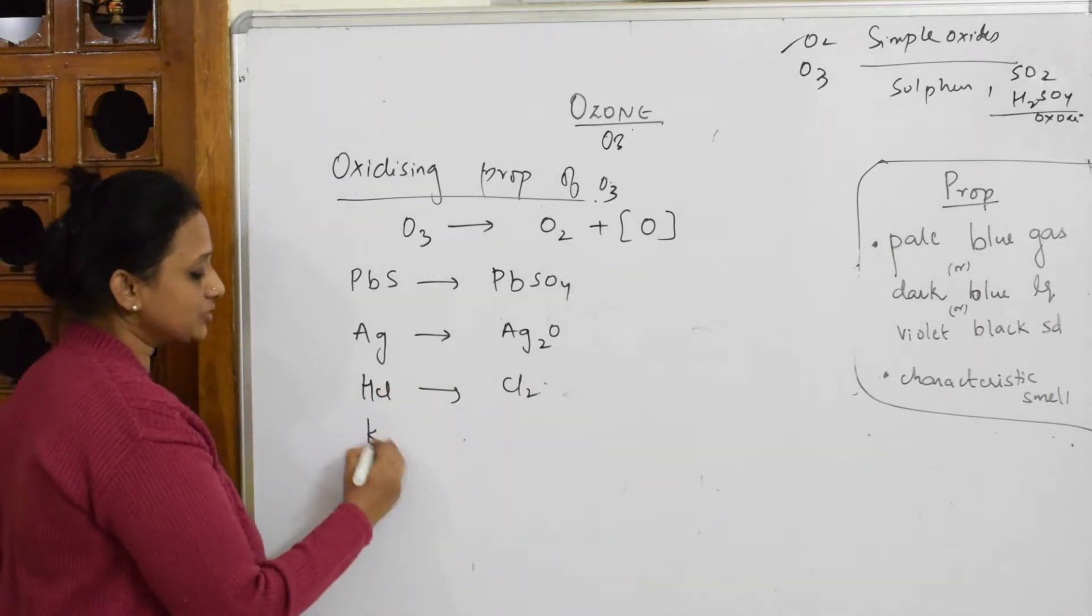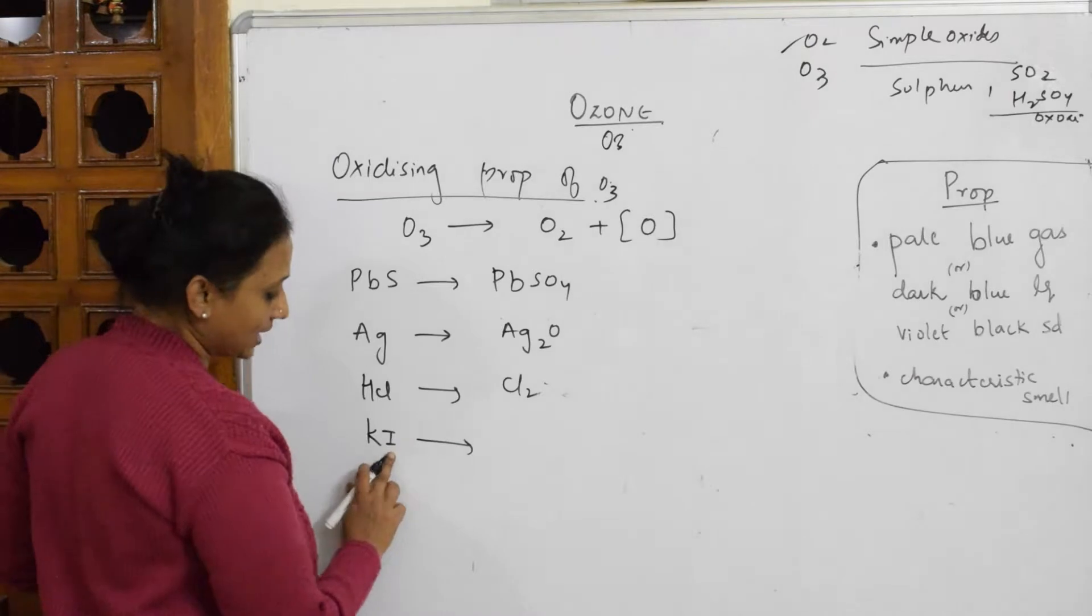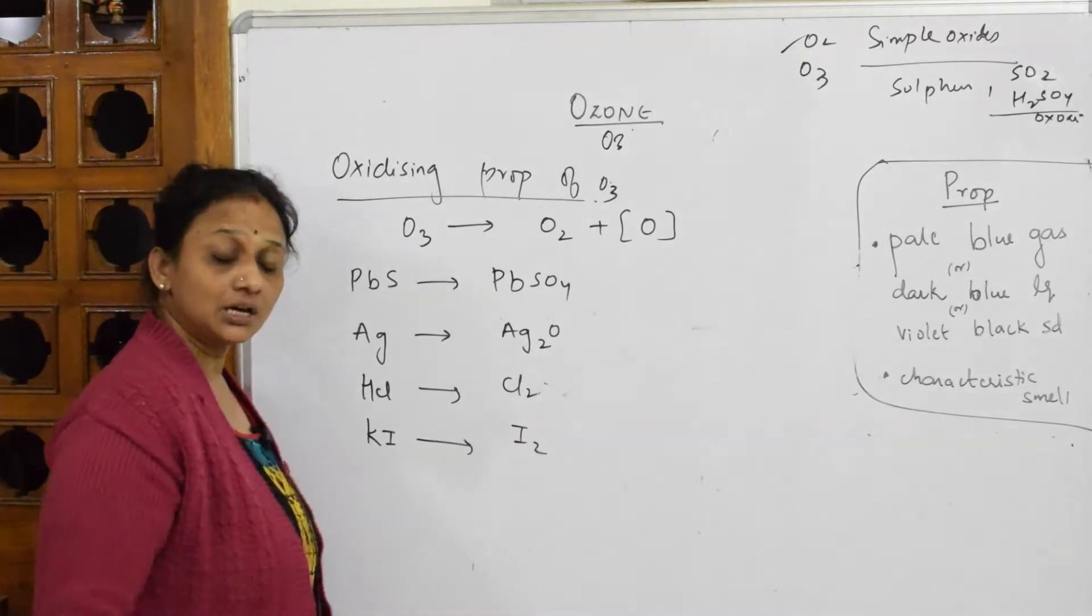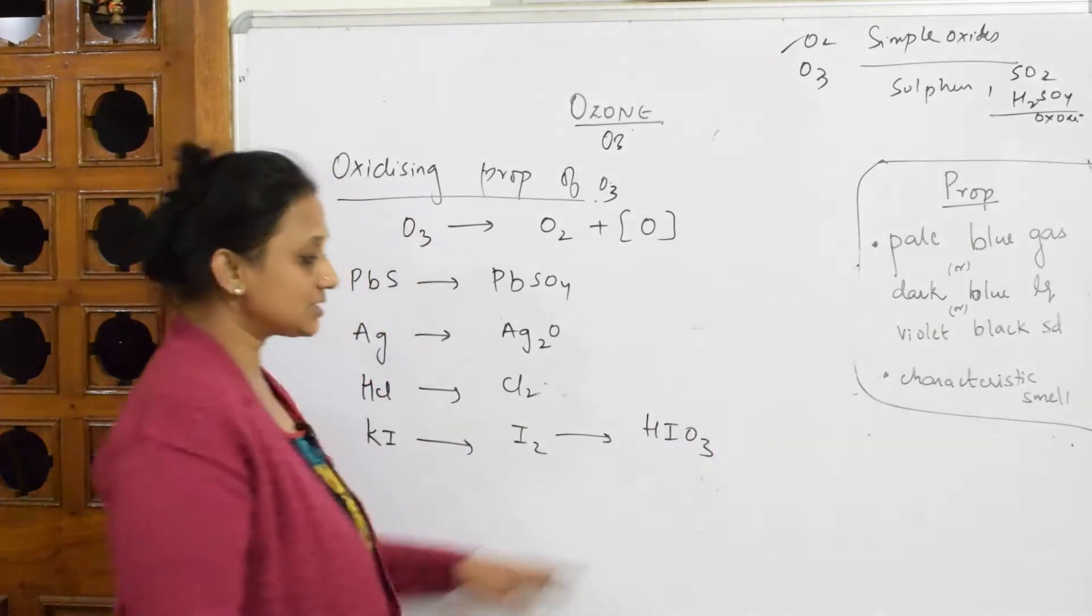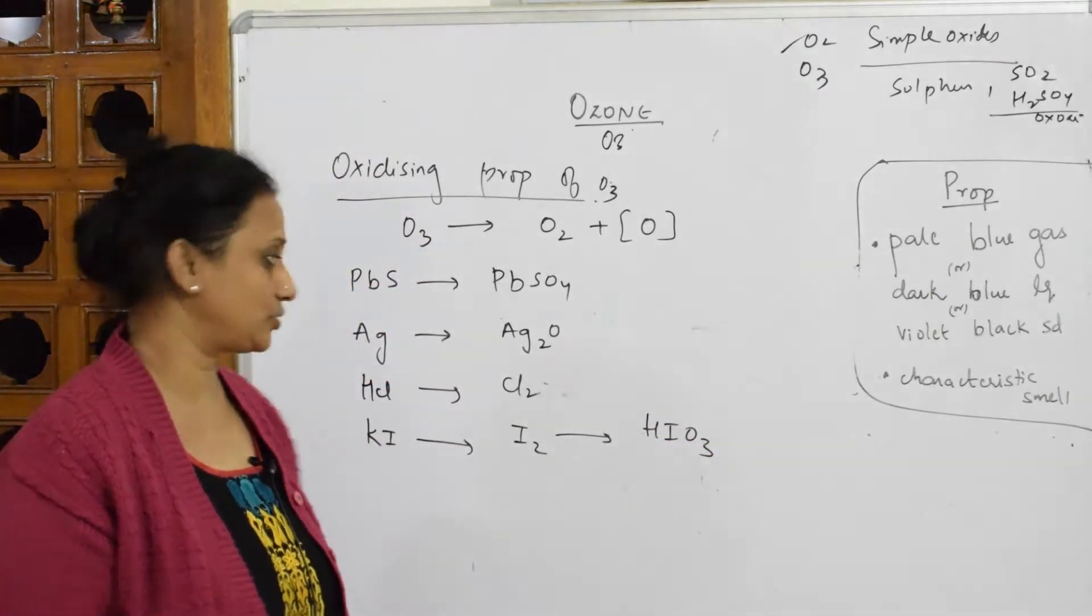When I have to see further it's going to convert potassium iodide to iodine. Iodine further gets converted into iodic acid. This is iodic acid HIO3 done.